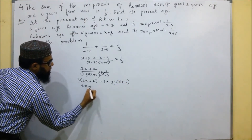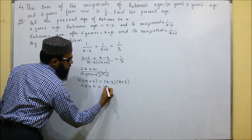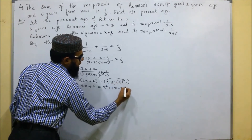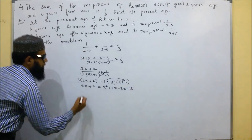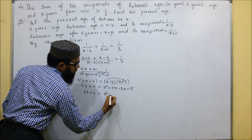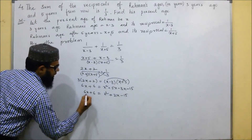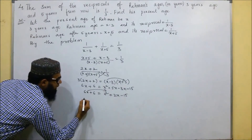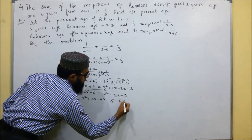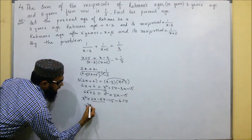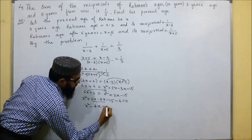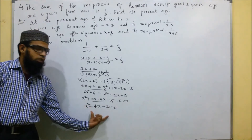3 times (2X plus 2) gives 6X plus 6. Expanding (X minus 3)(X plus 5) gives X squared plus 5X minus 3X minus 15, which is X squared plus 2X minus 15. So 6X plus 6 equals X squared plus 2X minus 15. Rearranging: X squared plus 2X minus 6X minus 15 minus 6 equals zero, giving X squared minus 4X minus 21 equals zero.